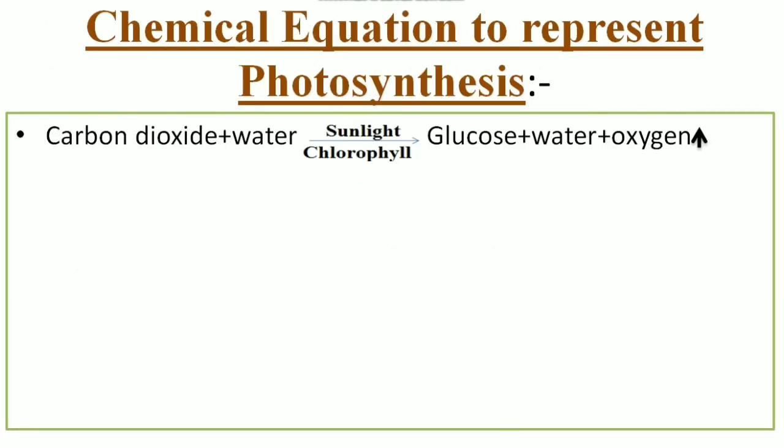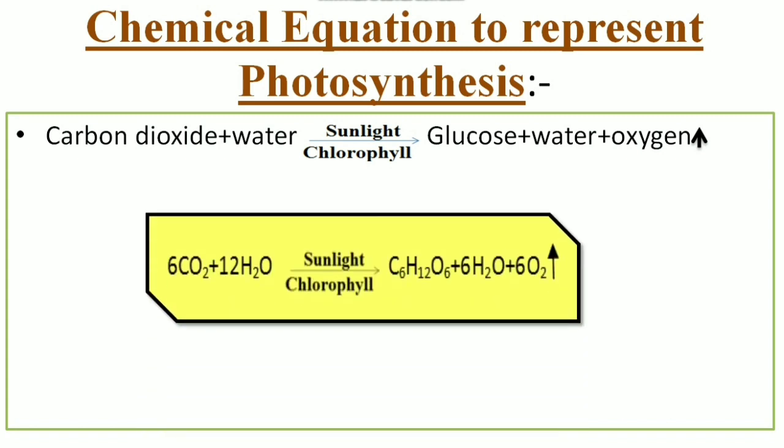So how to represent photosynthesis in the form of chemical equation? The raw materials are carbon dioxide and water. In presence of sunlight and chlorophyll the products are glucose, water and oxygen.